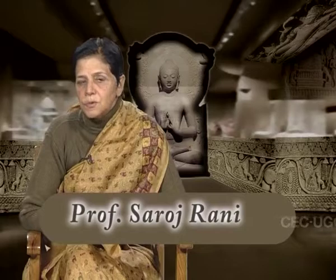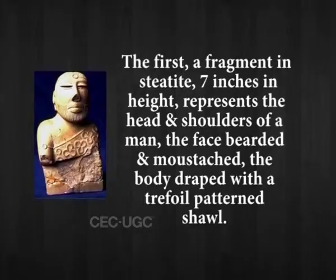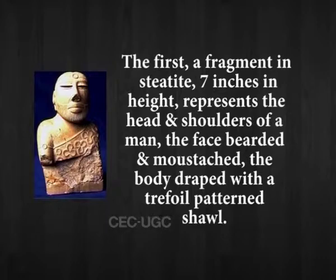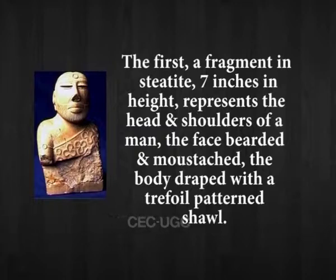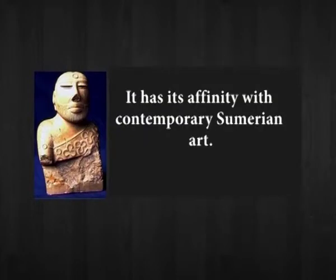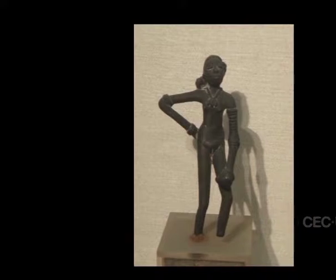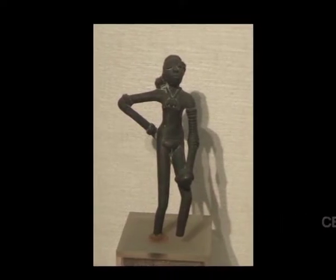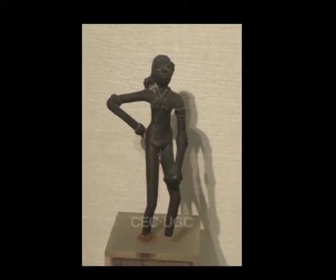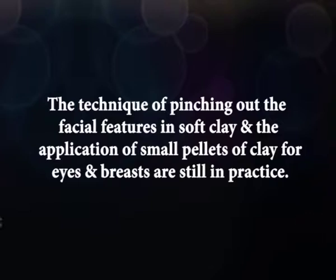Two other Indus statues from Mohenjo-daro are different in style and treatment. The first, a fragment seven inches in height, represents the head and shoulders of a man, the face bearded and moustached, the body draped with a trefoil-patterned shawl. It has affinity with contemporary Sumerian art. The second piece, a bronze casting four inches high, is the figure of a dancing girl with legs and arms disproportionately long, and a wide variety of terracotta figurines both animal and human, including mother goddess figures. The technique of pinching out facial features in soft clay and the application of small pellets of clay for eyes and breasts are still in practice.